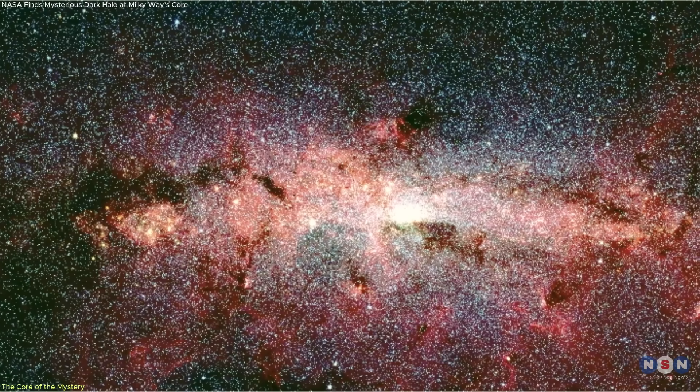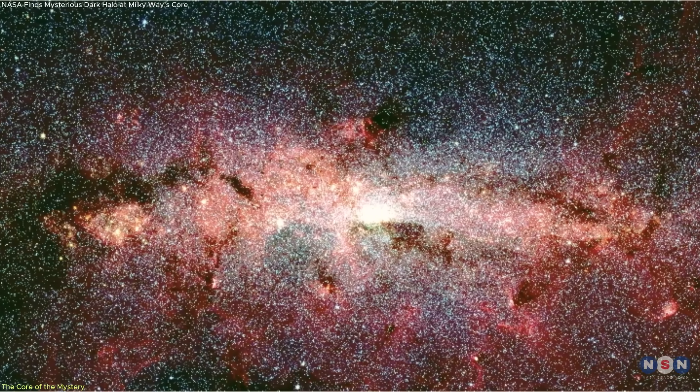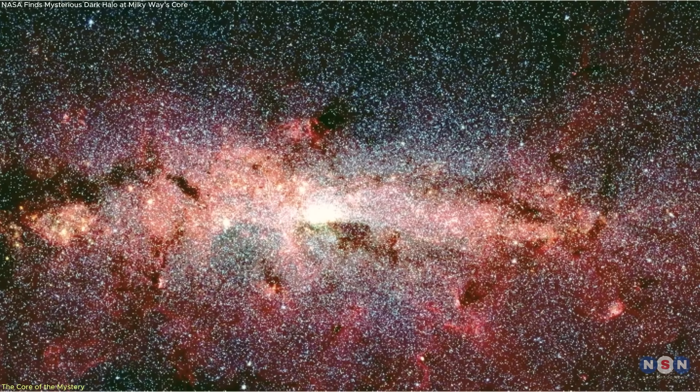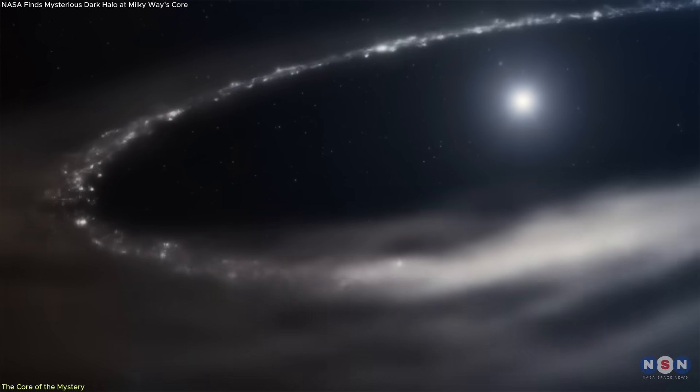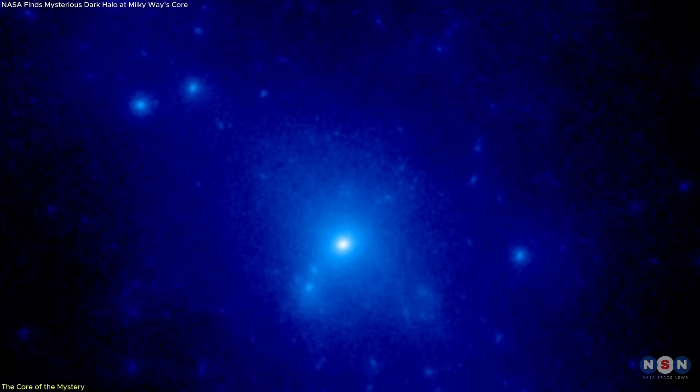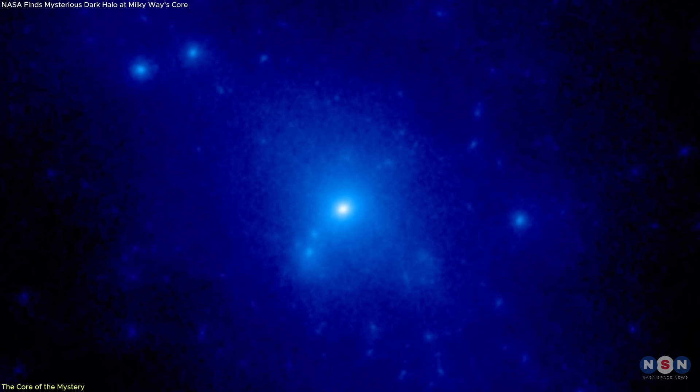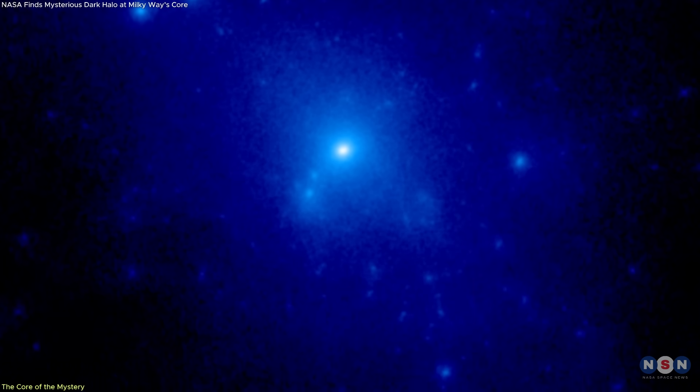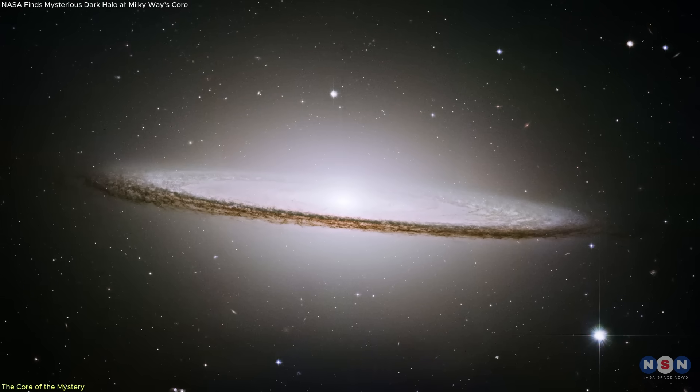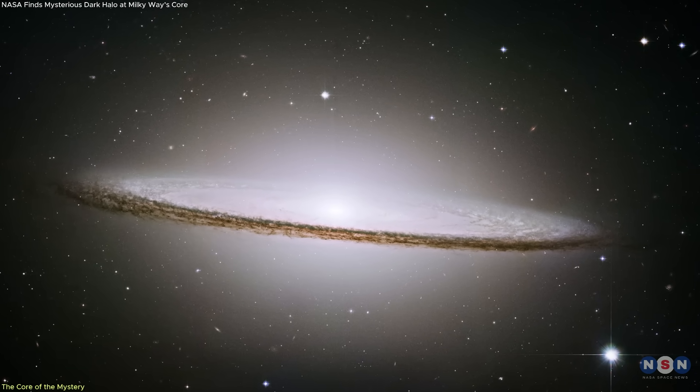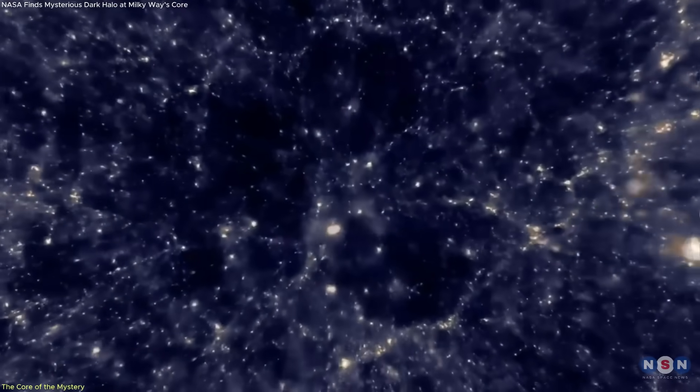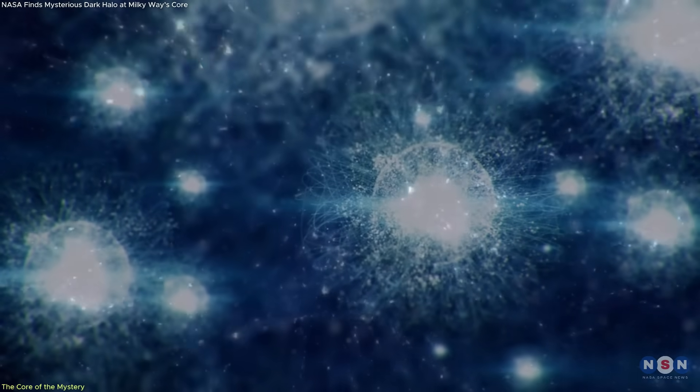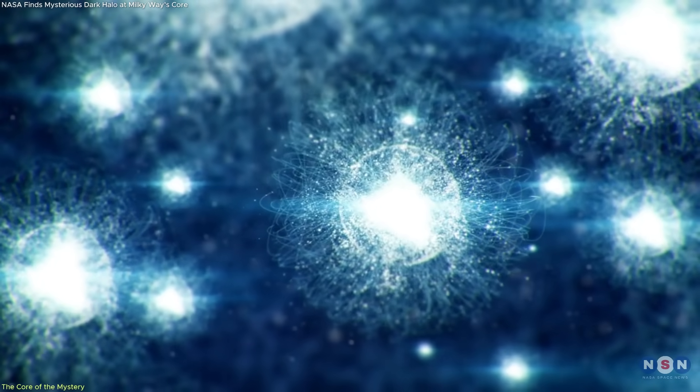Then came the unexpected structure. A halo-like distribution of ionization stretching outward in a pattern that didn't align with any known stellar source. It was spherically symmetric, persistent, and oddly quiet. This is what scientists are now calling a dark halo. Unlike ordinary gas or plasma, this structure doesn't emit any visible light. It interacts gravitationally, but appears invisible across most wavelengths. This behavior matches what's long been predicted for dark matter, particularly a form called light dark matter, composed of particles far less massive than those previously assumed.